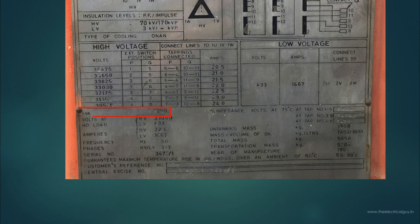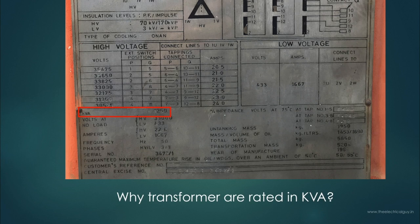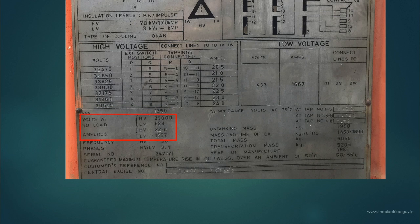Moving on here you can see the KVA rating of the transformer. This transformer is 1250 KVA. By the way if you would like to know why transformers are rated in KVA only you can watch my video on that. You will get link for that video down in the description. Next thing is voltage and amperes. Here you can see high voltage is 33 KV, low voltage is 433, high voltage ampere is 22 amps and the low voltage is 1667 ampere.